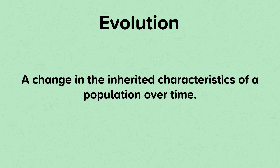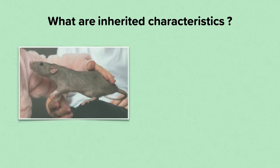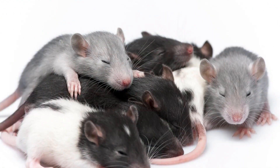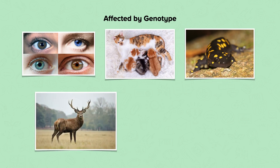Let's remind ourselves of what inherited characteristics are. These are characteristics that are passed down from generation to generation via genes, or more specifically, alleles. Any characteristic or phenotype that is influenced by an organism's genotype could potentially be affected by evolution. Examples are eye colour in humans, coat colour in cats, or the yellow spots on this salamander. It could also be the size of the antlers on this deer, or the hairs on this eyelash carp fungus.